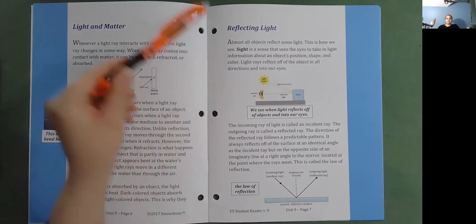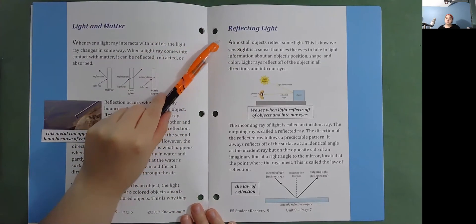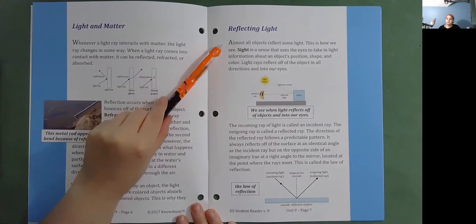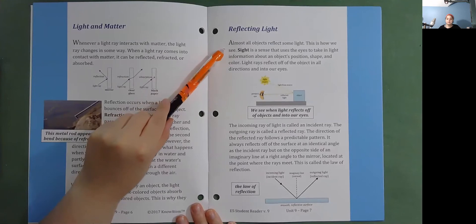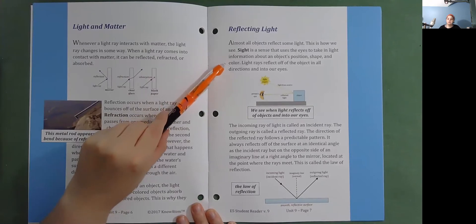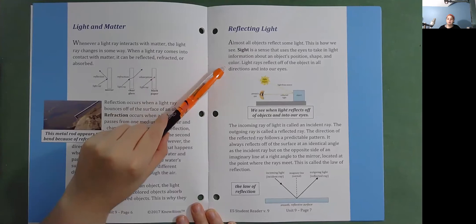Reflecting light. Almost all objects reflect some light. This is how we see. Sight is a sense that uses the eyes to take in light information about an object's position, shape, and color. Light rays reflect off of the object in all directions and into our eyes.